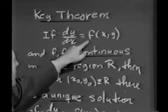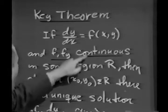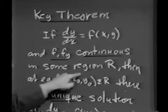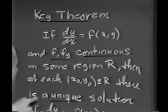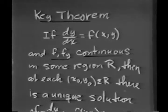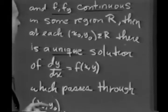If it turns out that f and its partial with respect to y are continuous in some region R, then at each point in R, there is a unique solution of dy/dx equals f of xy, which passes through x0, y0.